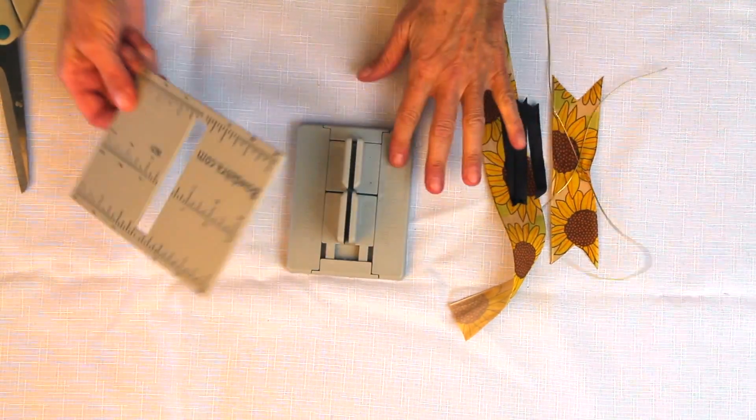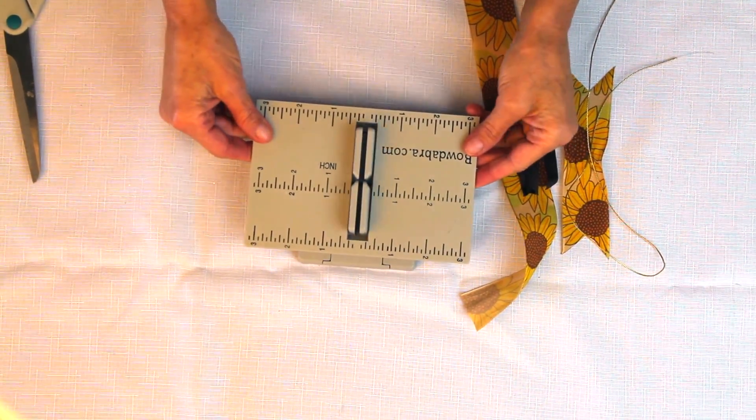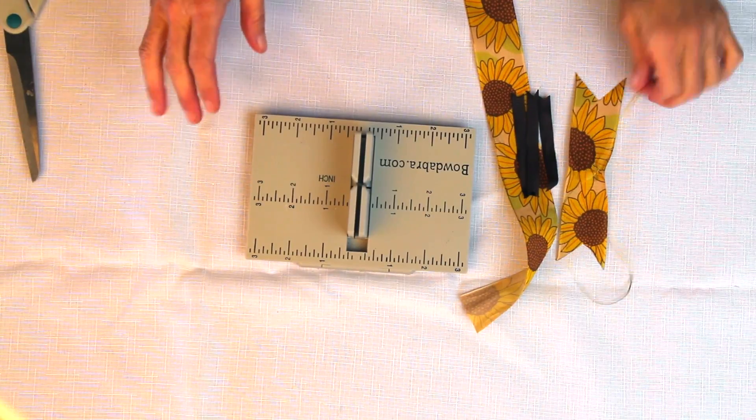For this hair bow, I'm going to take my Mini Bow Dabra, my hair bow tool and ruler, and just slip that into the Mini Bow Dabra.